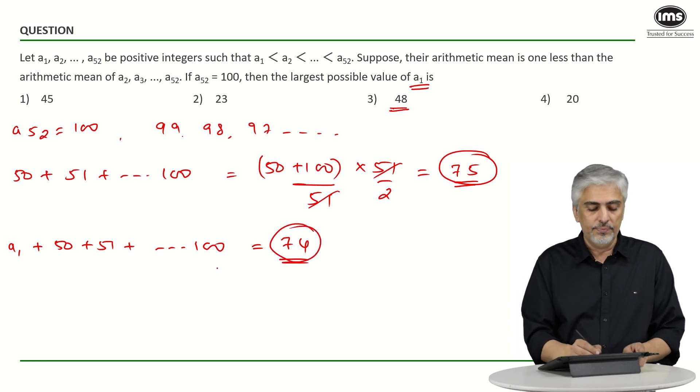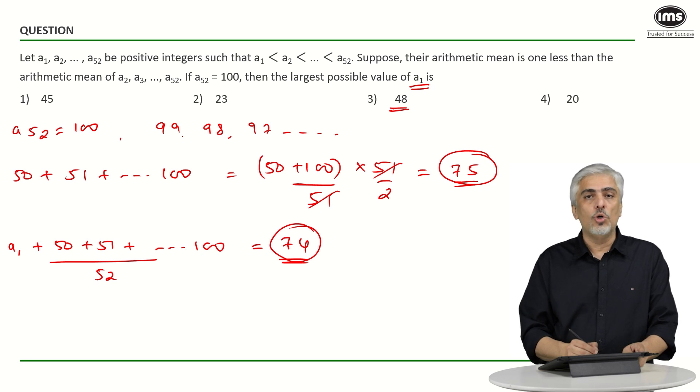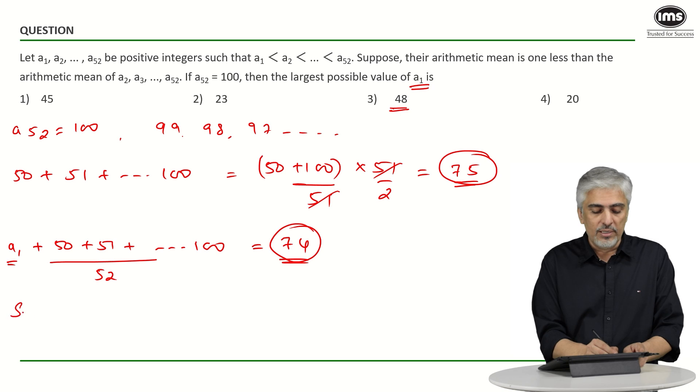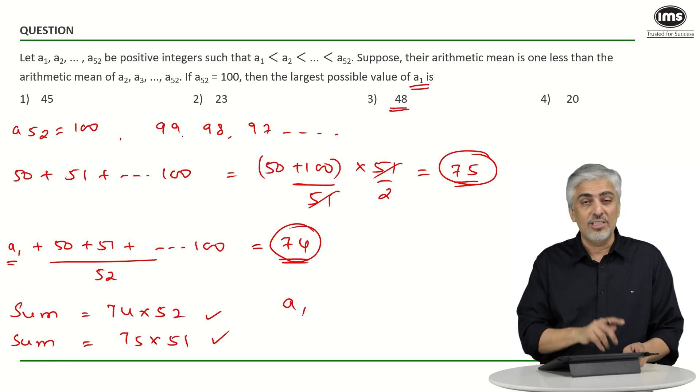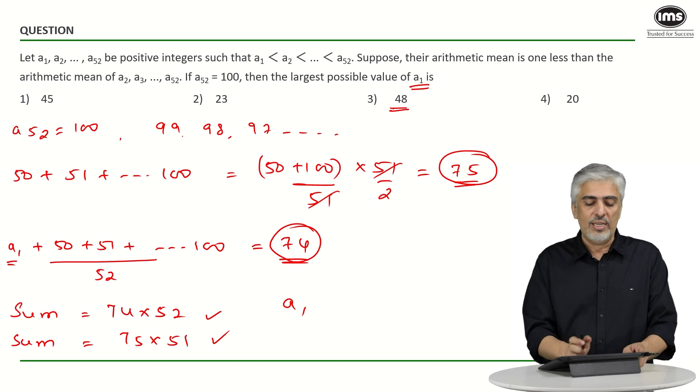Which means this divided by 52 will be 74. So what is the sum? I want to find a1, right. So what is the sum? The sum of 52 terms will be 74 into 52, and the sum of the 51 terms excluding the first term will be 75 into 51. Subtract these two to get a1. This is one, even within the second method there are two approaches. So a1 will come out to be what?